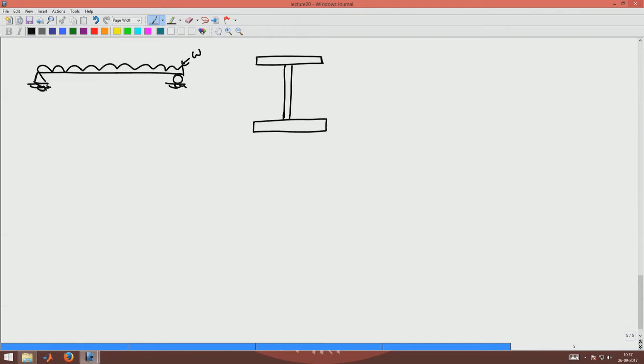Let us assume the following dimensions for this section: the web thickness is Tw and depth of web is H. Let us assume the flanges are of width Bf and thickness Tf. This flange is also of thickness Tf and width Bf.